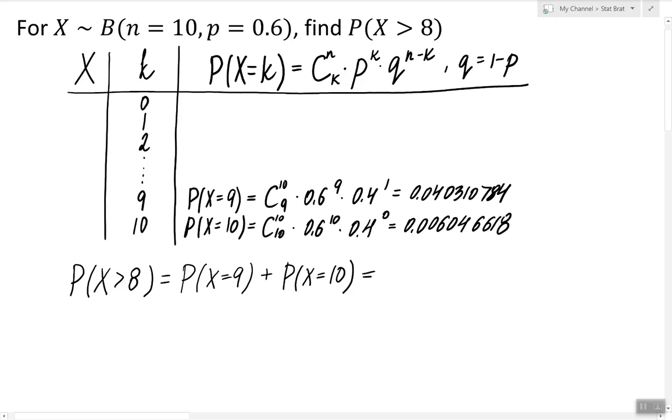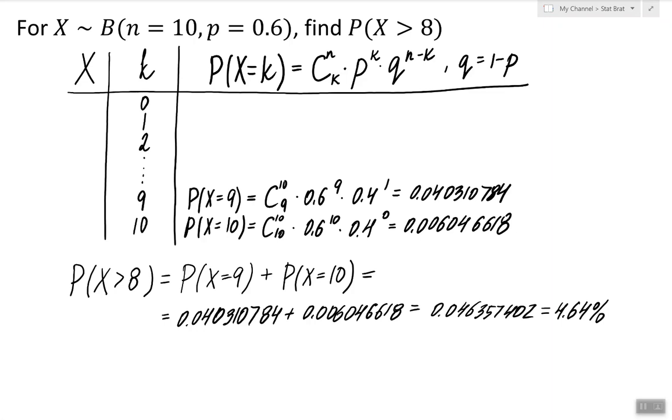So to answer the question that was asked in the beginning, we simply have to add these two numbers and the answer will be 0.046357402, which can be rounded and written in percent form as 4.64 percent. So this is the probability of the binomial random variable X to be greater than 8.